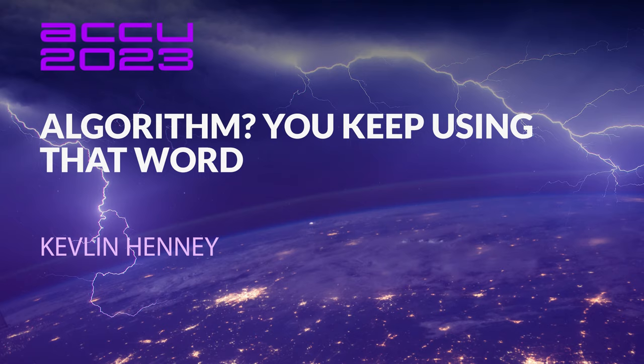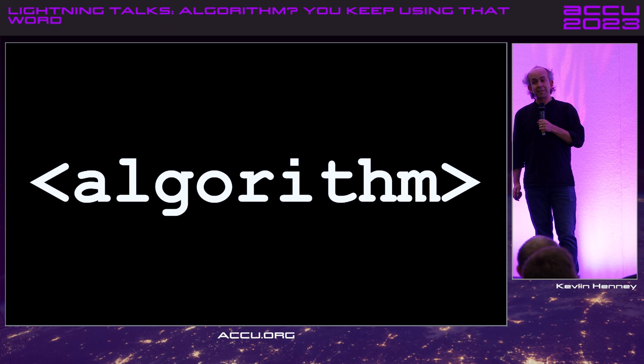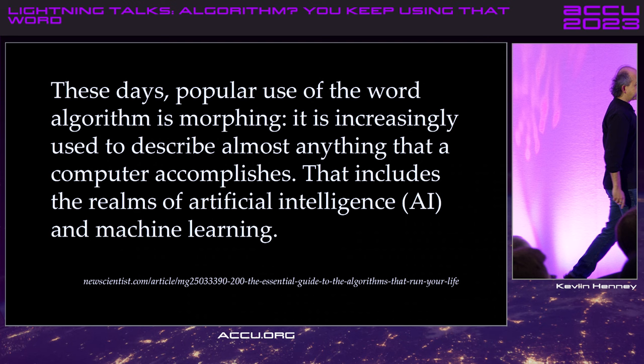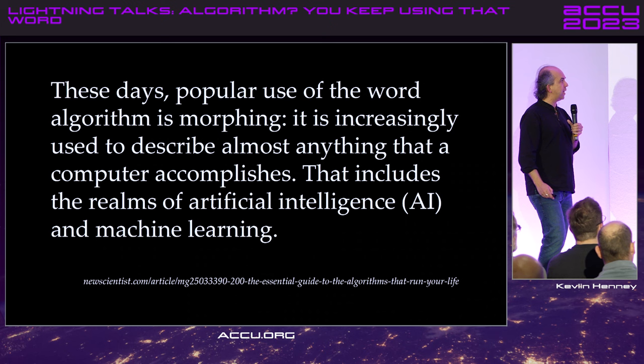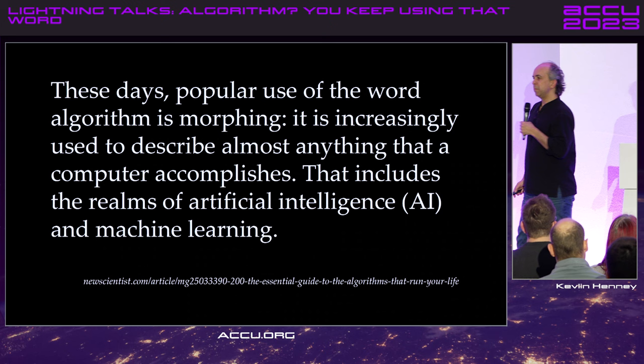I'm not talking about the misnamed C++ include header. And if you don't know why it's misnamed, we need to have a talk about what an algorithm actually is — and we're going to do that. I'm talking about this version. These days, popular use of the word algorithm is morphing. It is increasingly used to describe almost anything that a computer accomplishes, including the realms of artificial intelligence and machine learning.